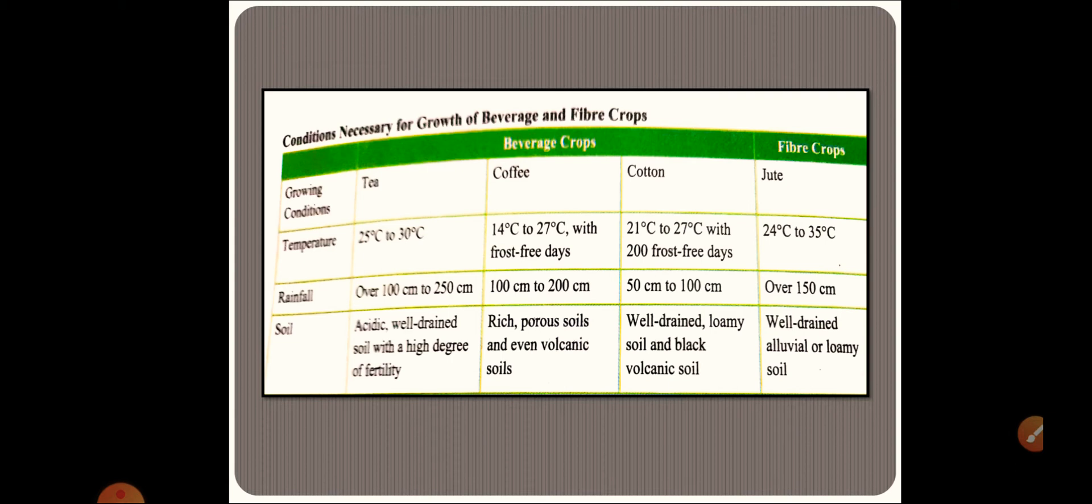Whereas if I am asking you for a particular crop like cotton, write about characteristics of the cotton, you have to give me the three parameters: temperature, rainfall, and the soil. So that is how you are going to write in your exam.